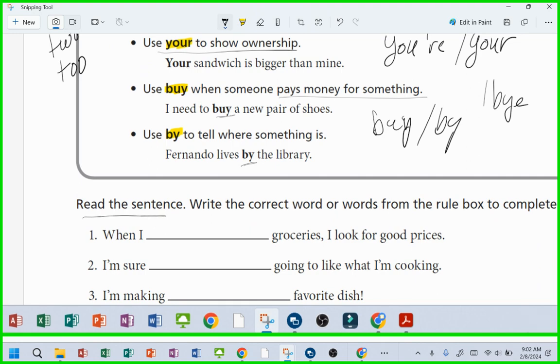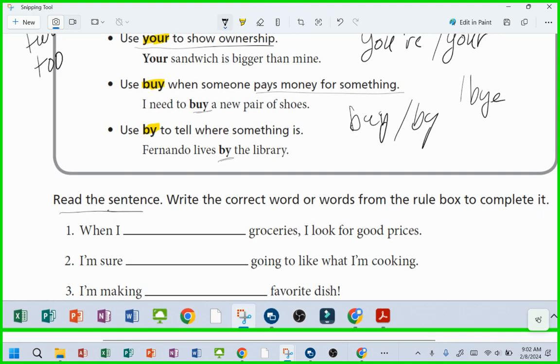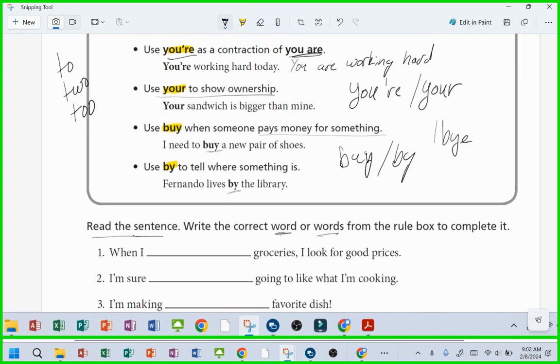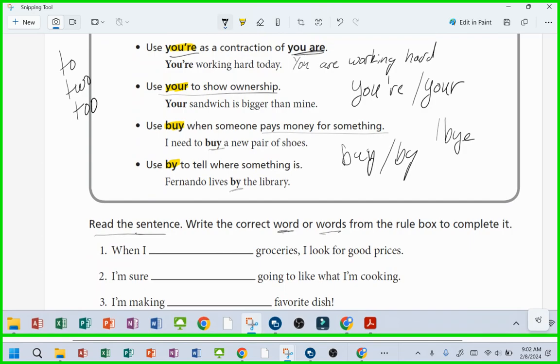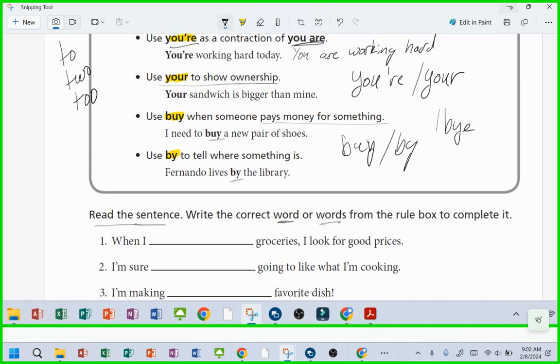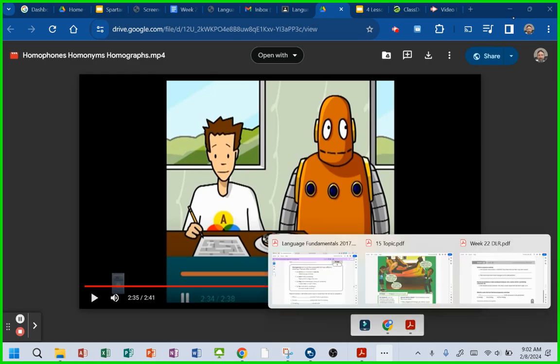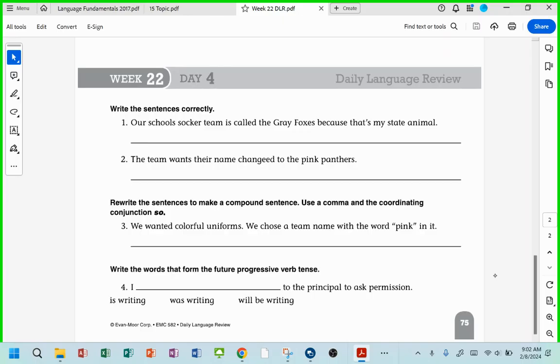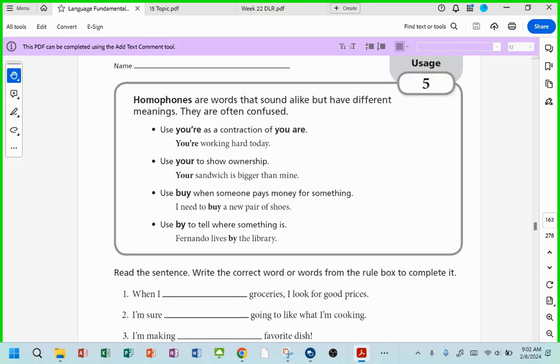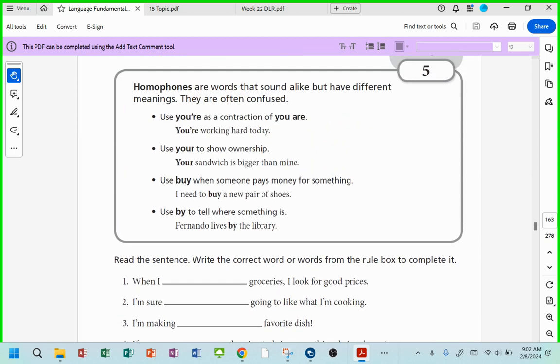It says, read the sentence, write the correct word or words from the rule box to complete it. And the rule box is up here, right? So maybe it isn't. Let me make sure where that rule box is. Yeah, it's up there.